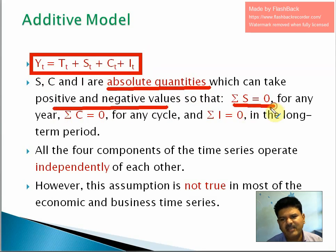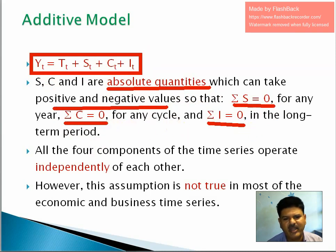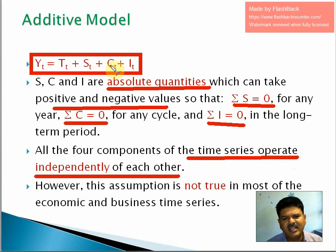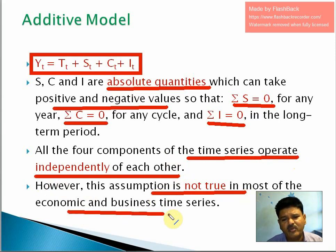In the additive model, the summation of S equals zero for any year, summation of C equals zero for any cycle, and summation of I equals zero in the long term. We assume that all four components of the time series operate independently, contributing independently in the model. However, this assumption is not true in most economic and business activity.